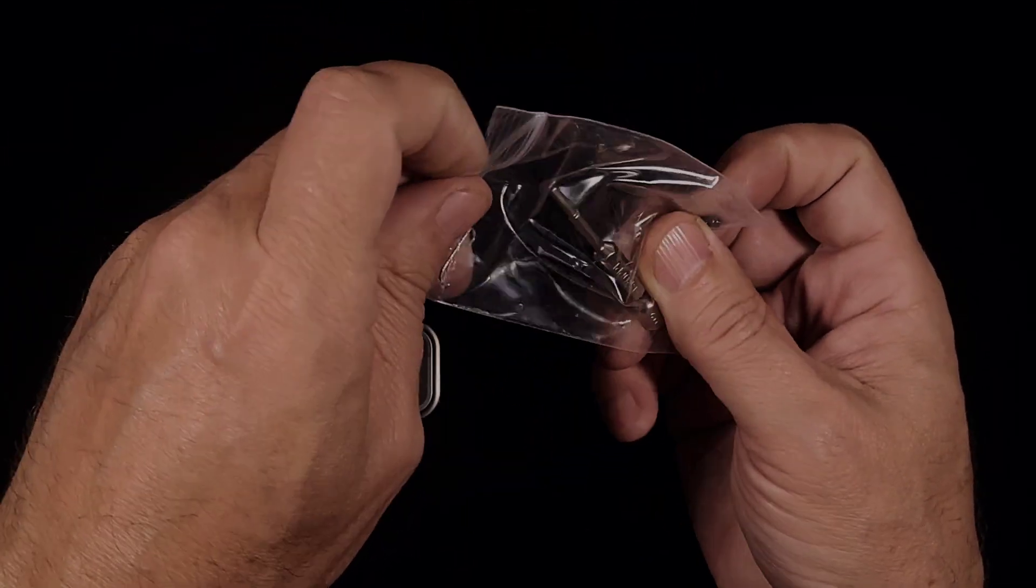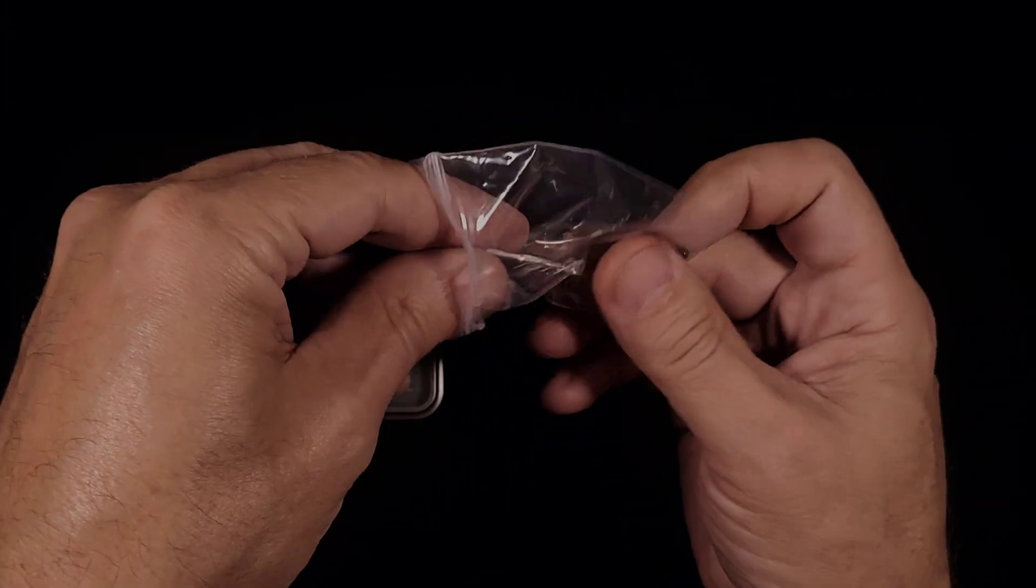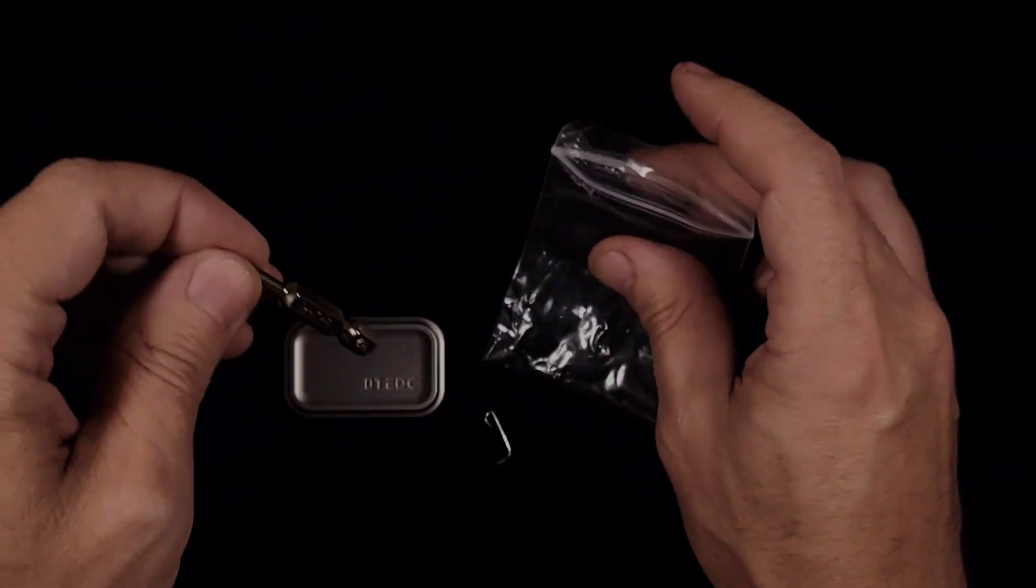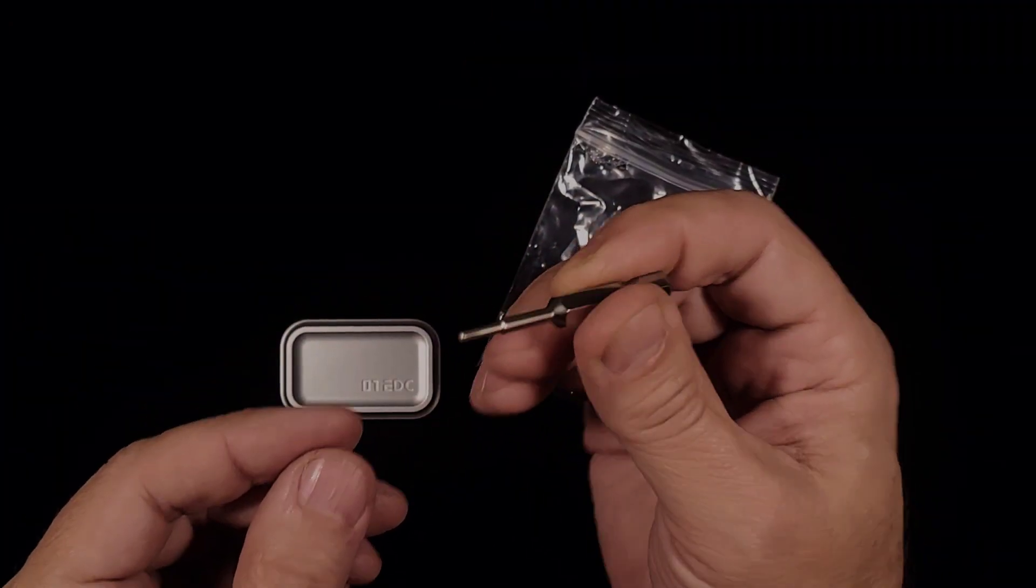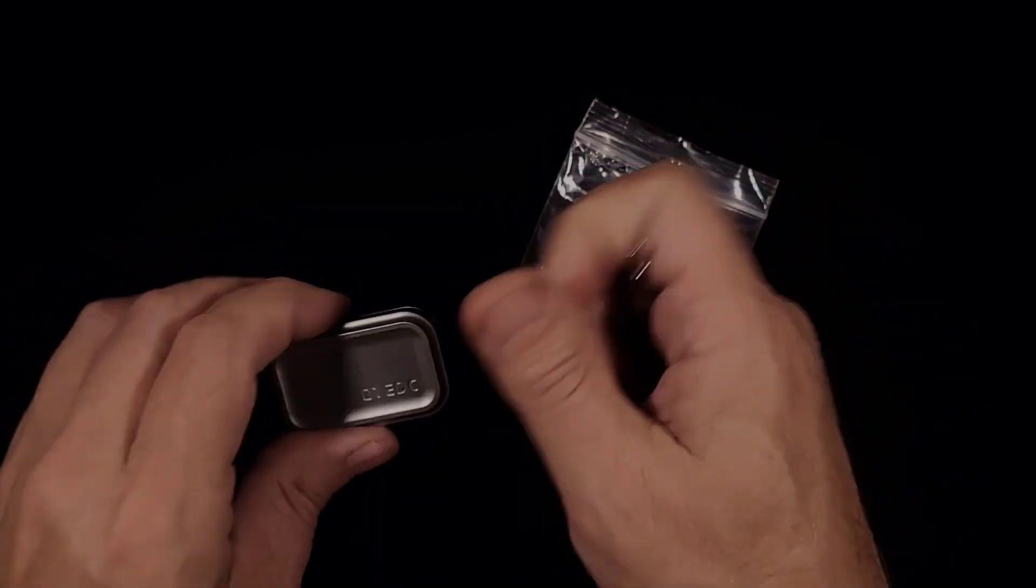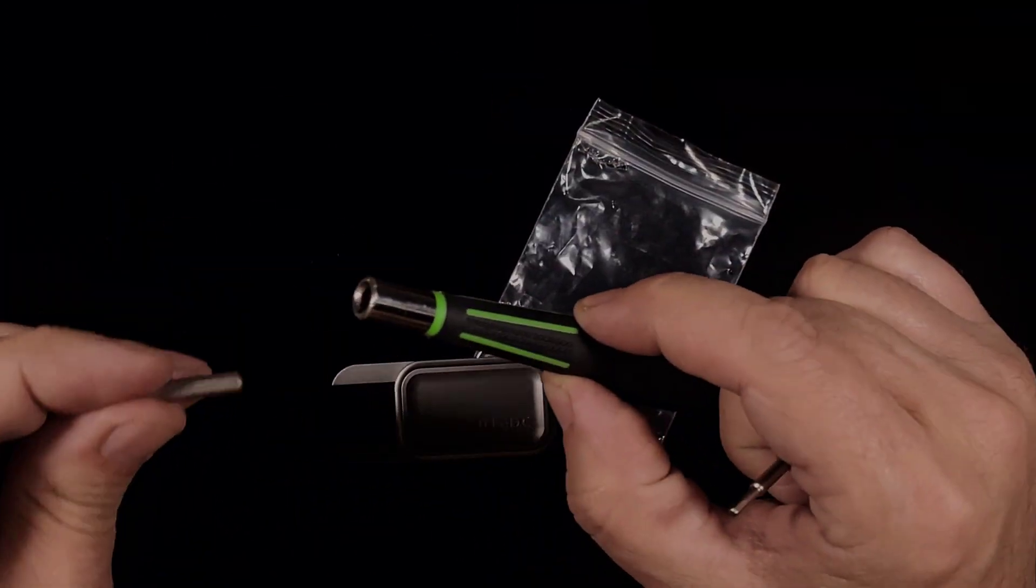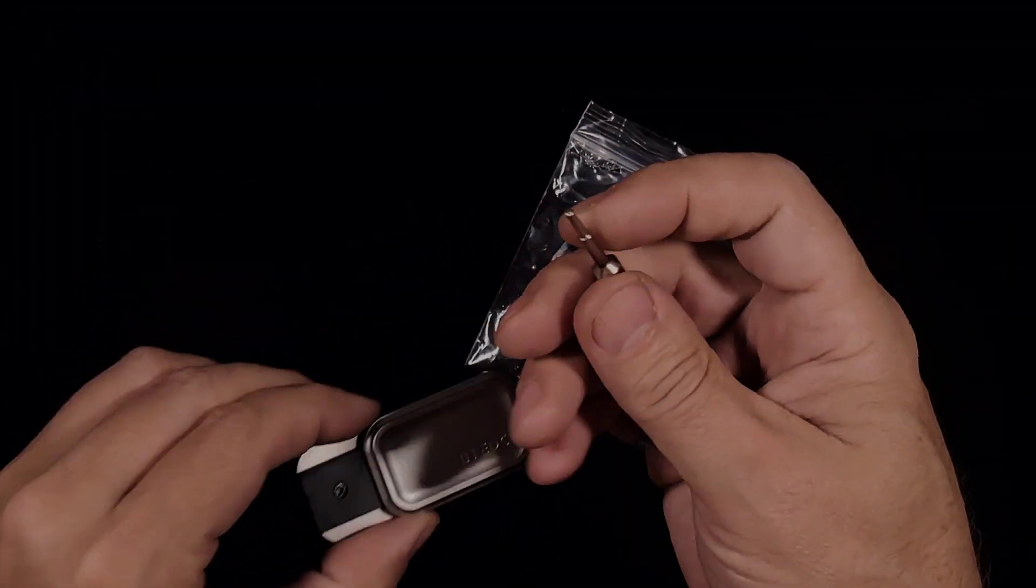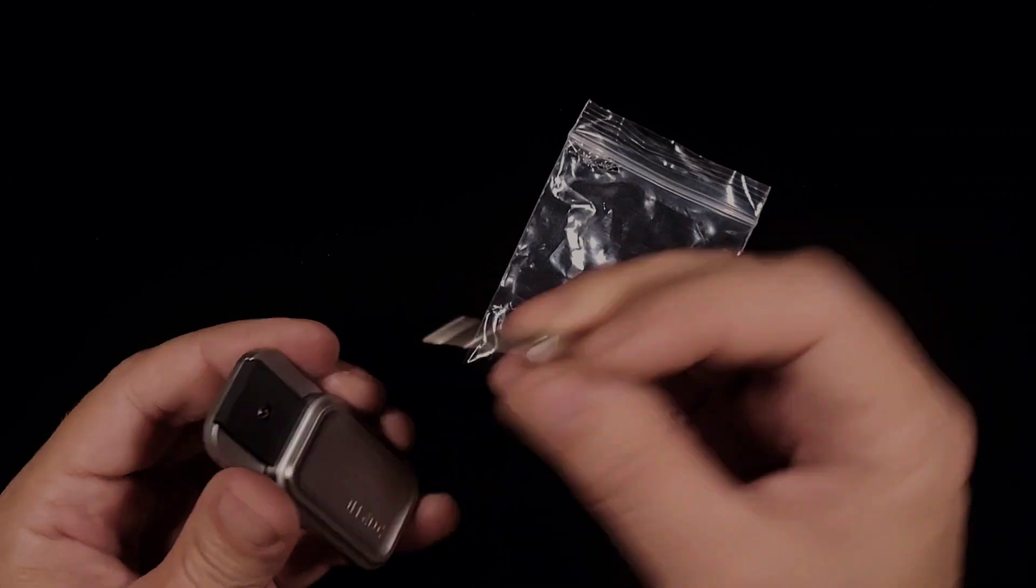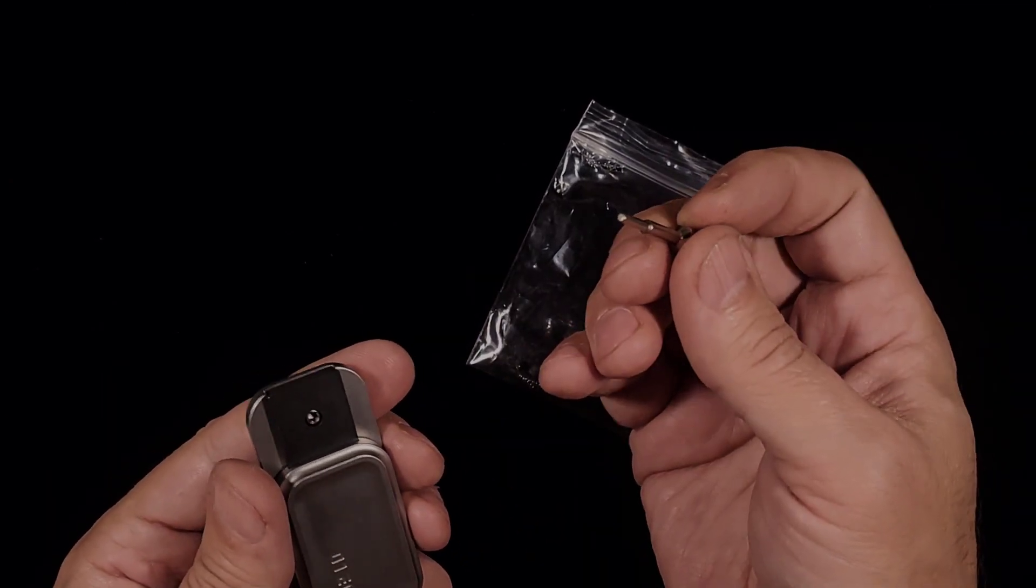Unfortunately, got some bad news to report here. This is an Allen head hex bit, and these are Torx, Torx nine to be precise. This doesn't even fit. Sometimes a hex bit will fit in a Torx, but it doesn't even fit. I feel like you wasted a chunk of steel there.